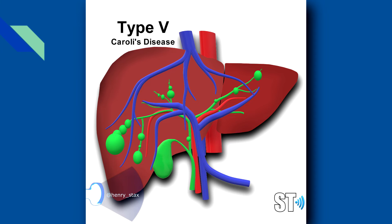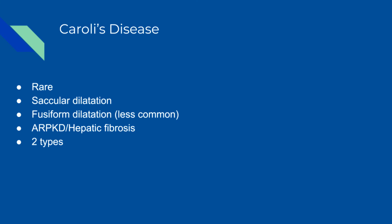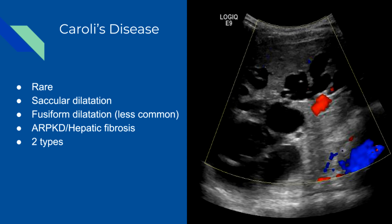Type 5 is Caroli's disease, which is a rare congenital disease of the intrahepatic biliary tree. It leads to non-obstructive, saccular or fusiform dilatation of the intrahepatic bile ducts.